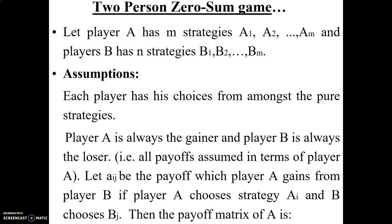The steps to solve a two-person zero-sum game are: first, write the payoff matrix; then apply the maximin or minimax principle. If there is a saddle point, identify the value of the game and write the optimal strategies for the players. If not, check whether it is a two-by-two payoff matrix game. If yes, solve using the analytical or matrix method for mixed strategy games.